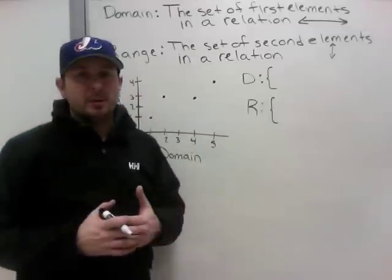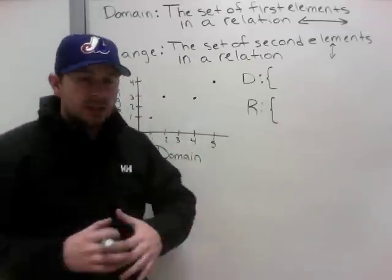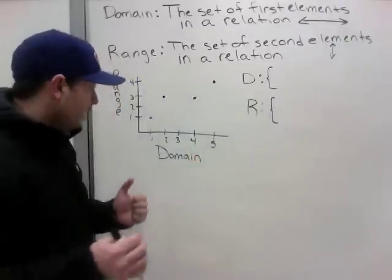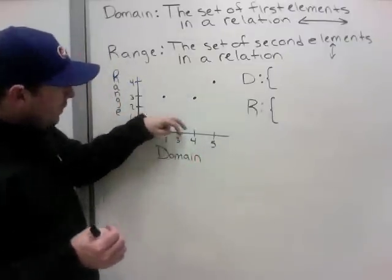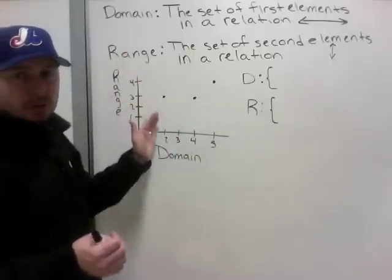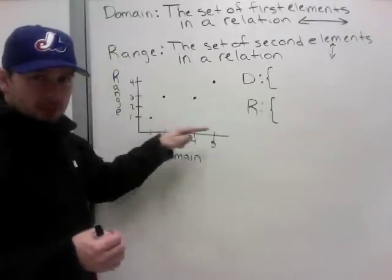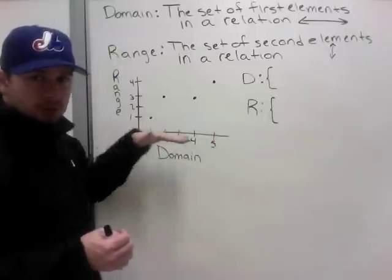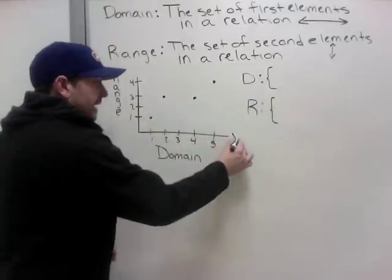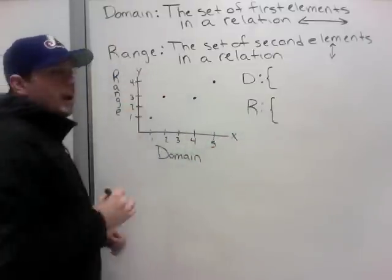Domain and range — something you have to remember. One way to think of it: the lion's domain. A lion walks on the ground; it doesn't fly up and down. So domain is flat, left and right — the x-axis. Range is up and down — the y-axis.